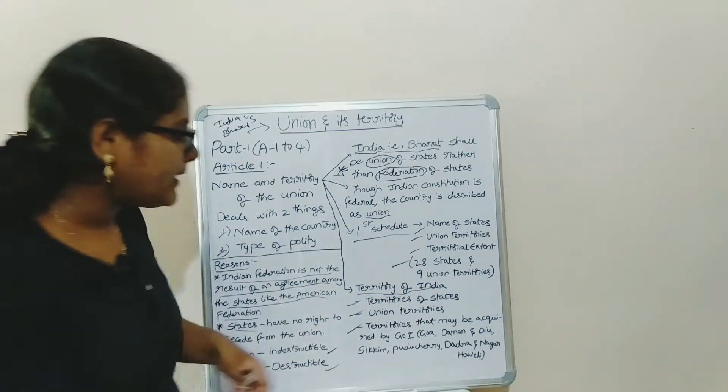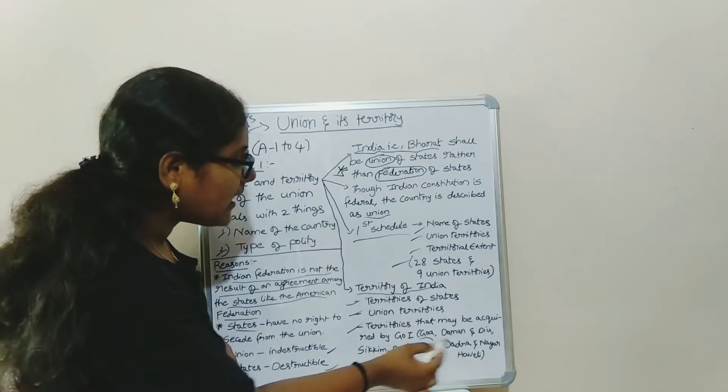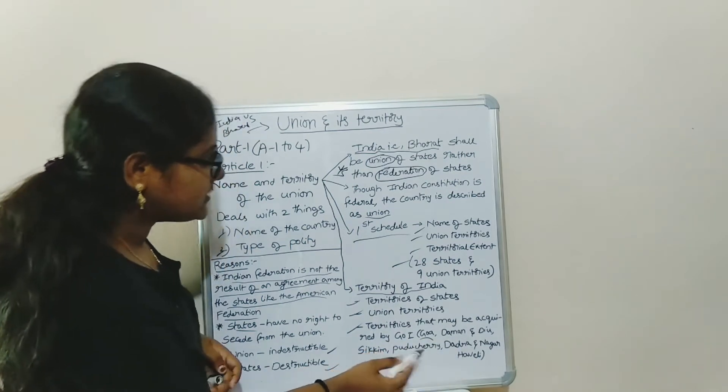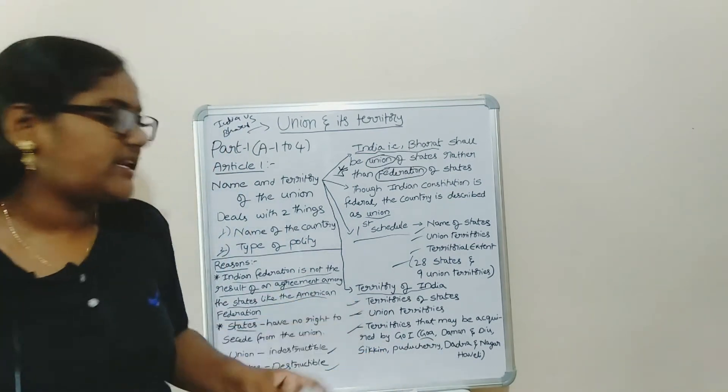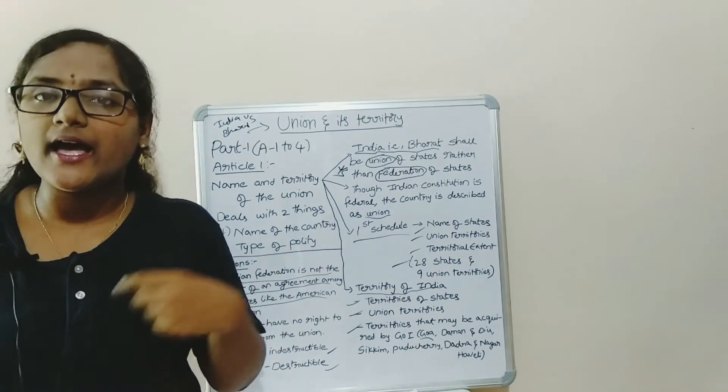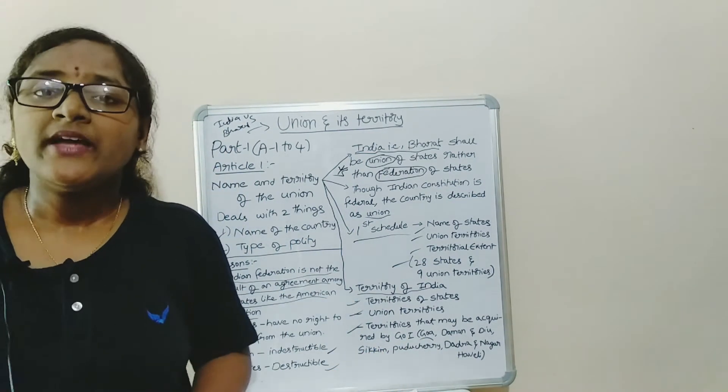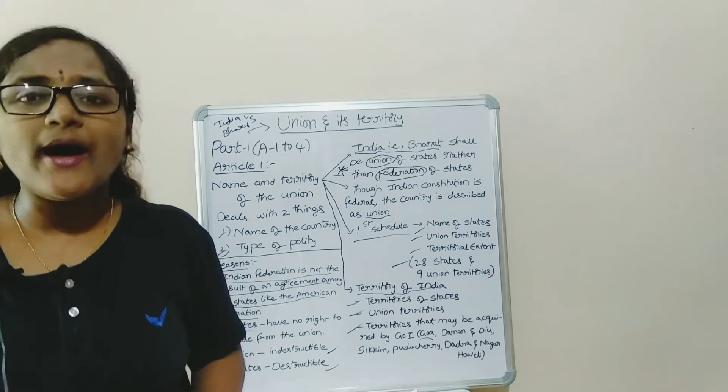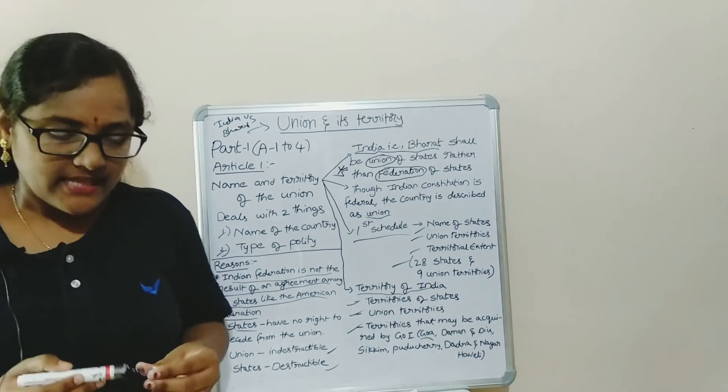Examples of such acquired territories include Goa, Daman and Diu, Sikkim, Puducherry, Dadra and Nagar Haveli. These are some territories acquired from foreign countries.